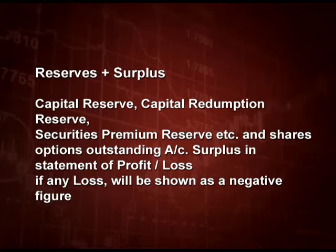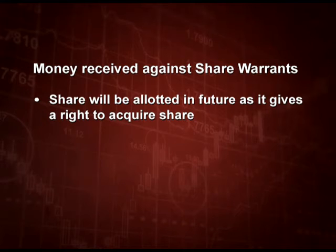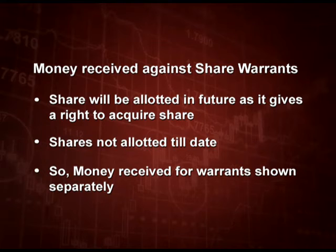Under shareholder funds, the next point is reserve and surplus, consisting of capital reserve, capital redemption reserve, and security premium reserve — previously known as share premium account — and share options outstanding account. Any surplus in the statement of profit and loss will be shown here, and if there is a loss it will be shown as a negative figure. As mentioned earlier, the profit and loss debit balance will be deducted from this figure. Next under share capital is money received against share warrants. These shares are not allotted till date, so whatever money you have received for the warrants should be shown separately under this head.